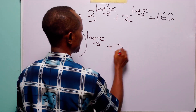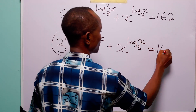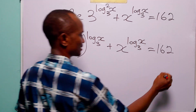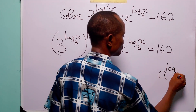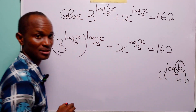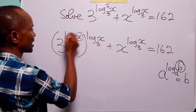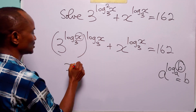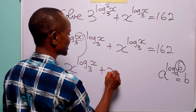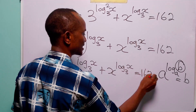Now we still have x to the power log to base 3 of x, and this is equal to 162. Recall that a to the power log to base a of b is simply equal to b. So 3 to the power log to base 3 of x is simply equal to x. This gives us x to the power log to base 3 of x, plus x to the power log to base 3 of x, is equal to 162.